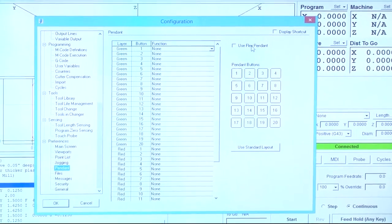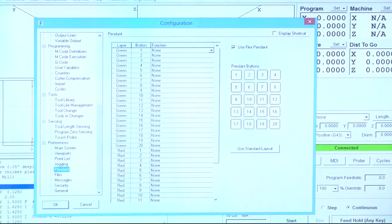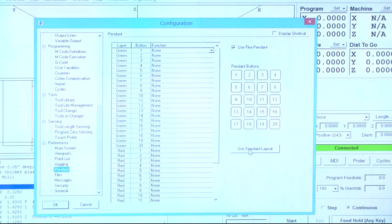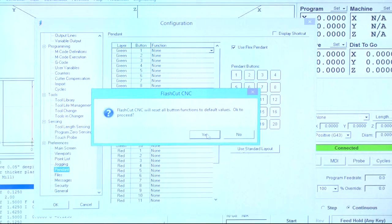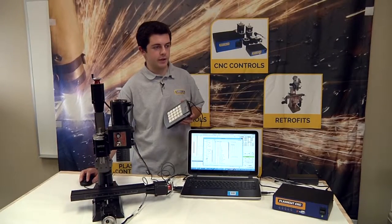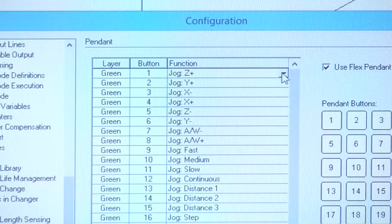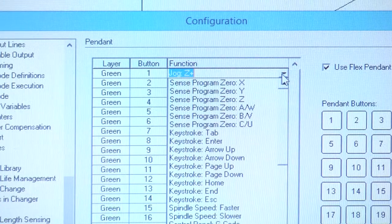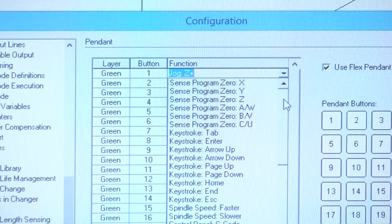First we're going to click use flex pendant. Then we're going to go down and click use standard layout. This will match up all of the buttons with the default stickers that FlashCut has in place. However it's important to note that you can change these and arrange them however you wish.